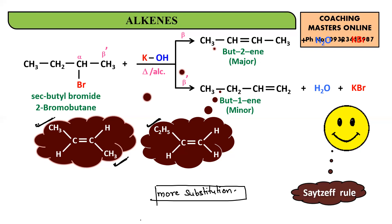That was all about Zaitsev's rule and dehydrohalogenation. Please go through a few more examples of dehydrohalogenation. Zaitsev's rule is a very important rule for deciding the major and minor components of a reaction. We'll stop here and meet in the next module with new reactions and mechanisms. Thank you, students, and happy learning!